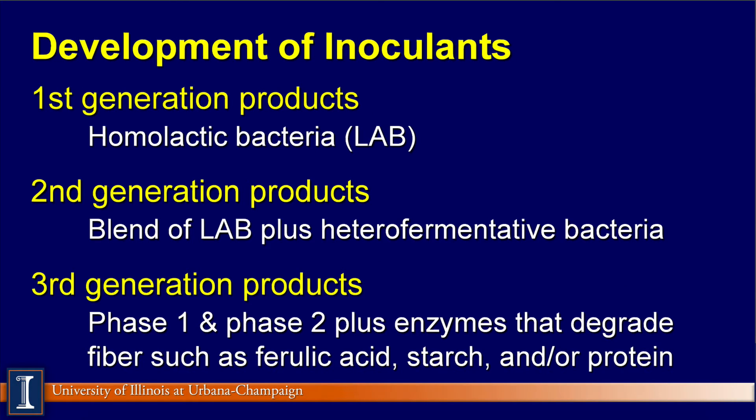Looking at the research, there are several generations of products. The first generation was the homolactic bacteria, abbreviated as LAB. The second generation included LAB plus heterofermentative bacteria, primarily for crops needing protection at feed-out — high moisture corn and some cereal grains. Third generation products now include enzymes that may degrade fibers, make starch more available, and make proteins more available for bacteria as well.